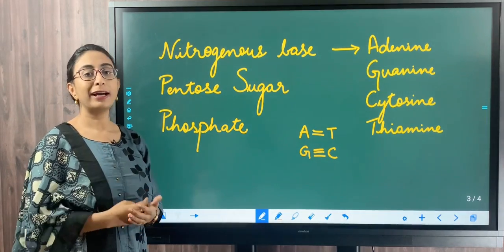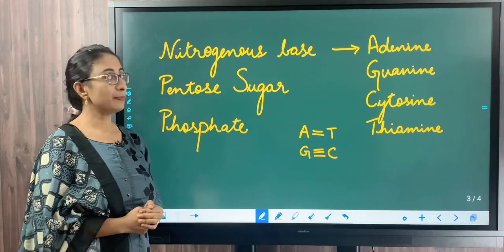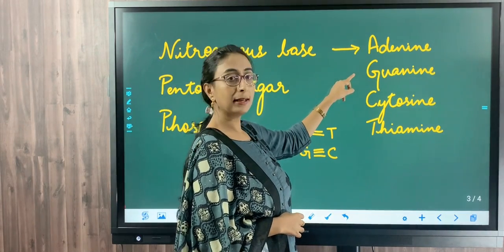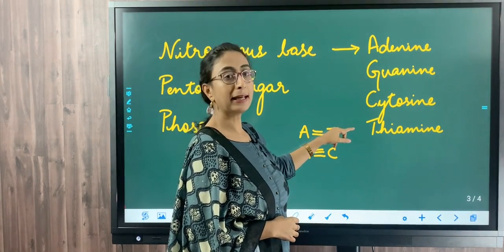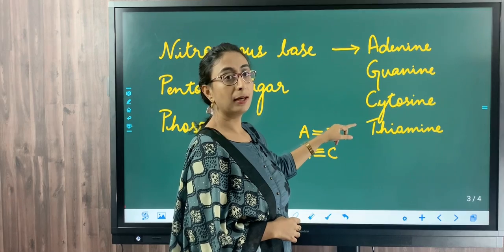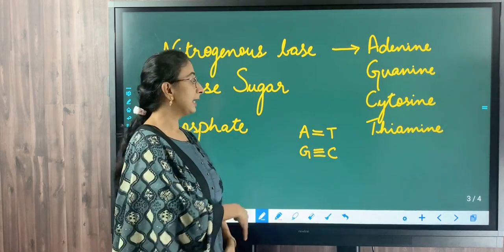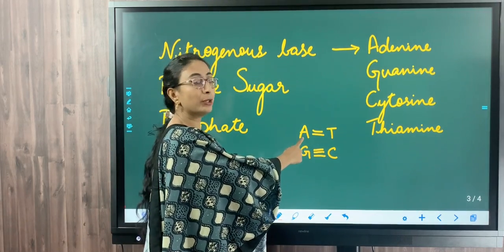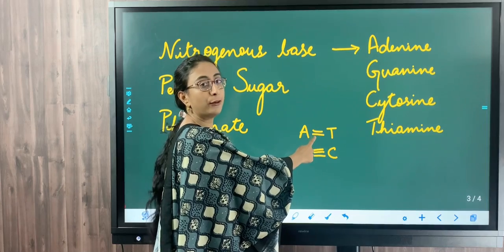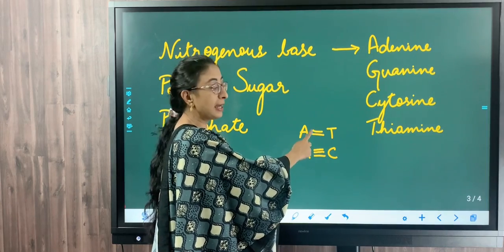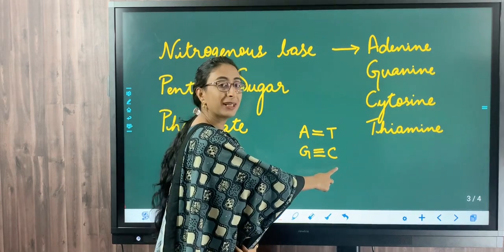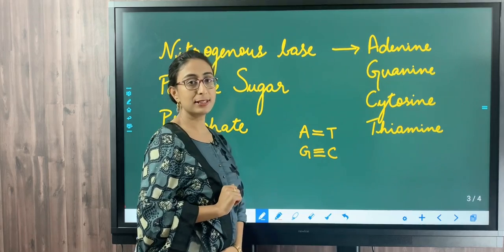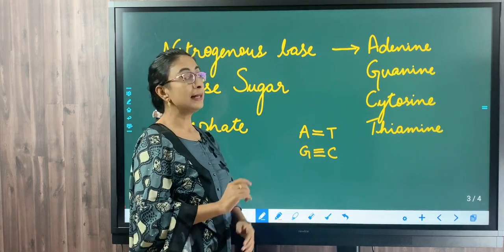There are four kinds of nitrogenous bases: adenine, guanine, cytosine, and thymine. Adenine always base pairs with thymine with two hydrogen bonds, and guanine always base pairs with cytosine with three hydrogen bonds.